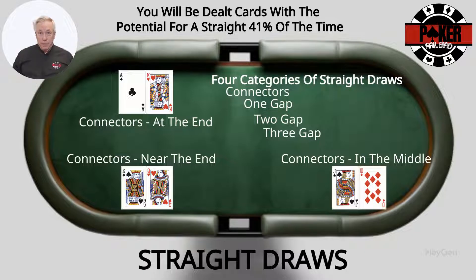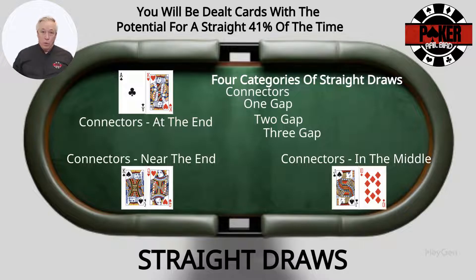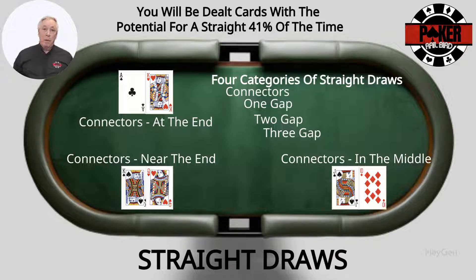Let's break it down using connectors as an example. Take a hand like Ace-King — these cards are connected, but they're at the end of the straight spectrum. This means you can only make a straight in one direction, requiring a board of Queen-Jack-10. With Ace-King, the odds of making a straight are about 3%, or 32.33 to 1 odds. Next, we have hands that are near the end, such as King-Queen. These cards can make a straight in two directions: Ace-Jack-10 or Jack-10-9. The odds of making a straight with King-Queen are about 5%, or 19 to 1 odds. Finally, the best straight draws come from middle connectors like Jack-10. These hands offer four possible ways to complete a straight, compared to two ways for near-the-end hands, and just one way for end-of-the-spectrum hands. Middle connectors like Jack-10 have about a 9% chance of making a straight, or 10.11 to 1 odds, from preflop to river. It's important to note that hands like Ace-King or King-Queen are often played more for their high card value and kicker strength than for their straight draw potential.